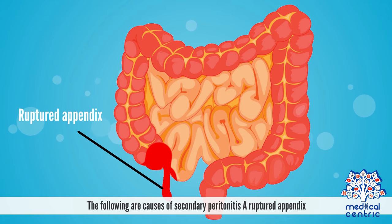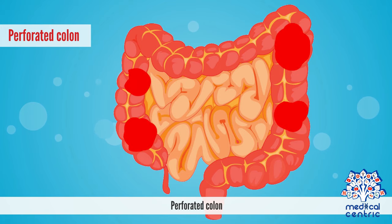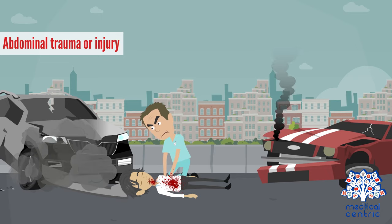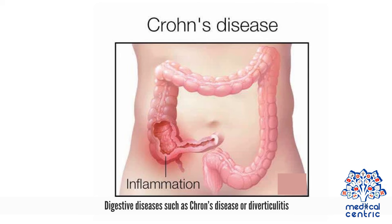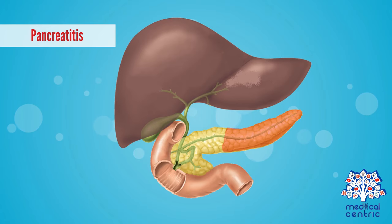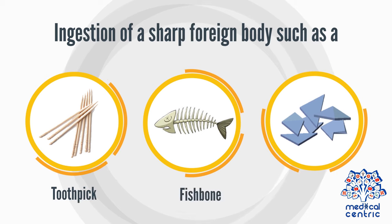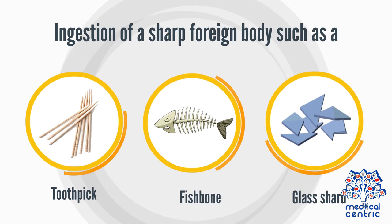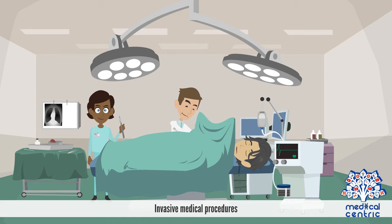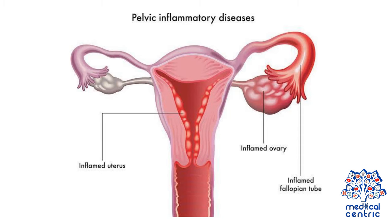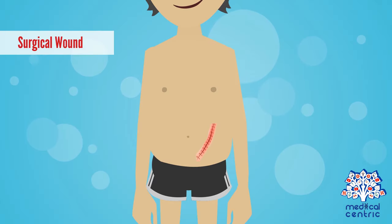Causes of secondary peritonitis include a ruptured appendix, perforated colon, a stomach ulcer, abdominal trauma or injury, digestive diseases such as Crohn's disease or diverticulitis, pancreatitis, ingestion of a sharp foreign body such as a toothpick, fishbone or glass shard, invasive medical procedures including peritoneal dialysis, use of feeding tubes, pelvic inflammatory disease, and surgical wound.